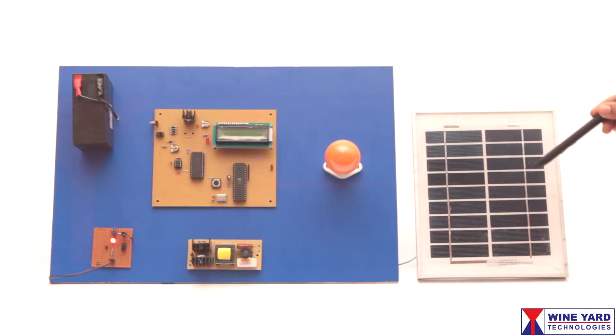This project is a solar based inverter. This is the solar panel which converts light energy into electrical energy. This LED indicates the availability of solar energy.